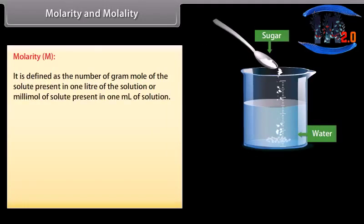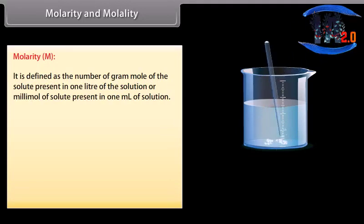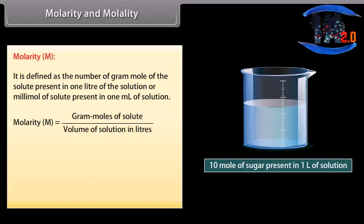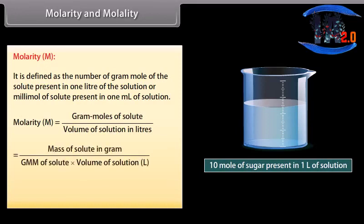Molarity is defined as the number of gram moles of the solute present in one liter of solution, or millimoles of solute present in one milliliter of solution. Mathematically, molarity M is equal to W_B in grams divided by the product of gram mole mass of B and volume of solution in liters. A solution having molarity equal to one is called a molar solution.